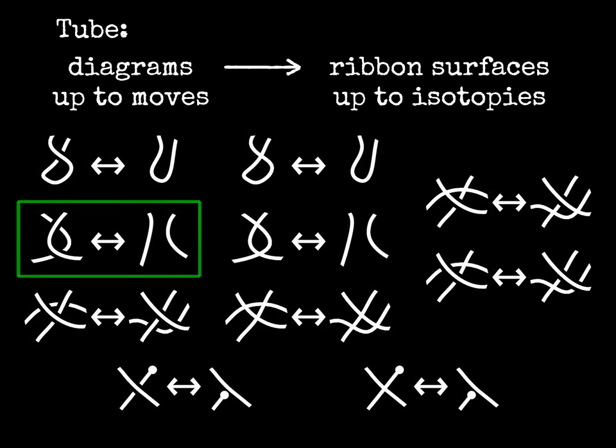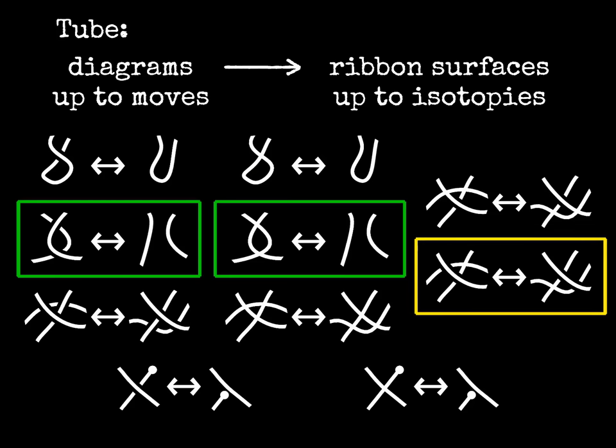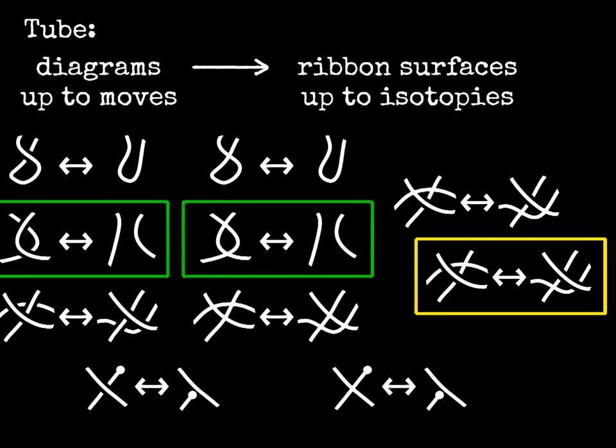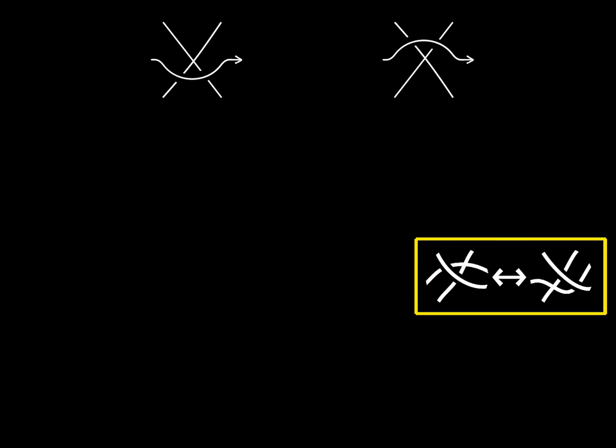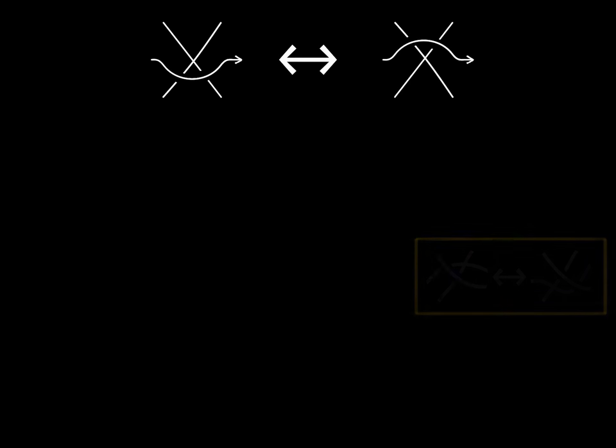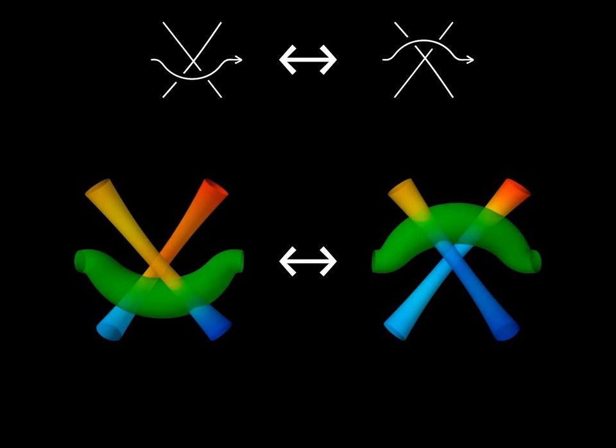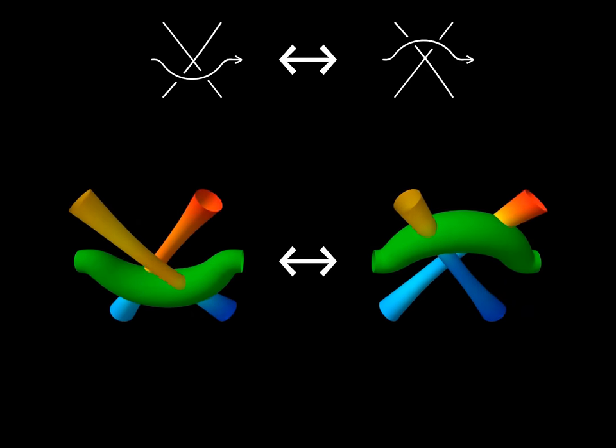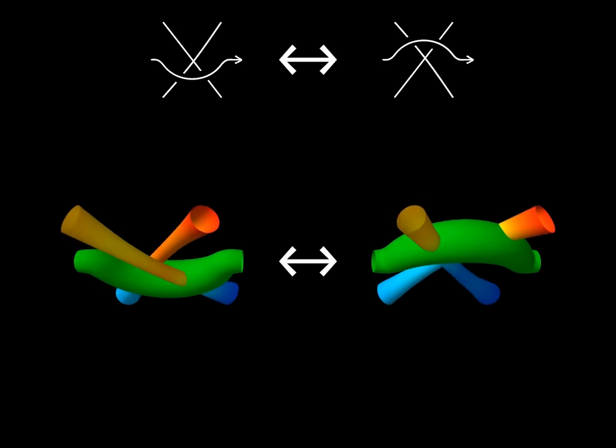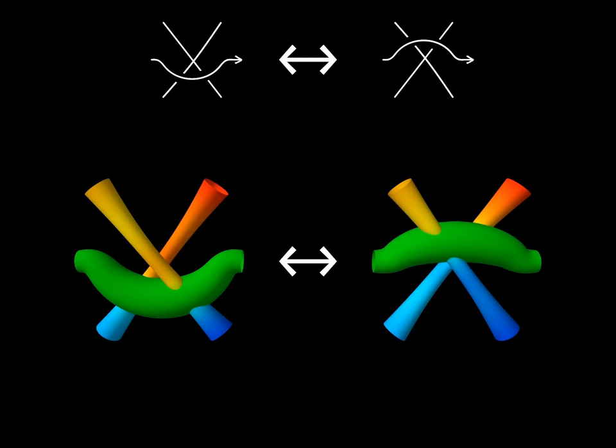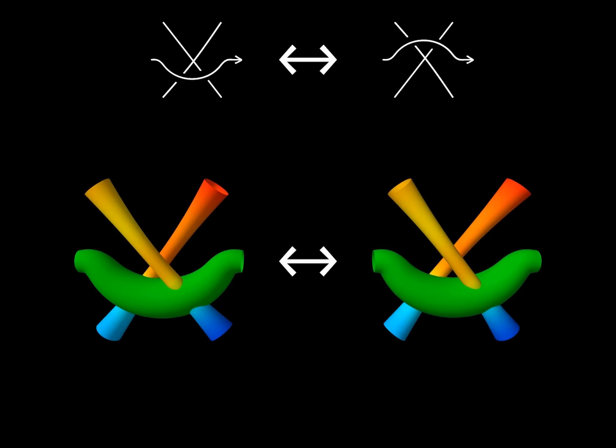We have already seen the translation of the Reidemeister 2 moves into isotopies of ribbon surfaces. Now we demonstrate another move. This move allows the strand to pass over a virtual crossing. We translate the diagrams into tubes in 3 space, and we find a movement in 4 dimensional space that allows to transform the two tangles into each other.